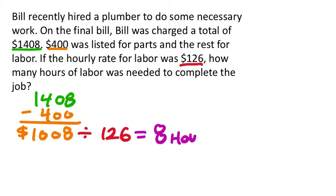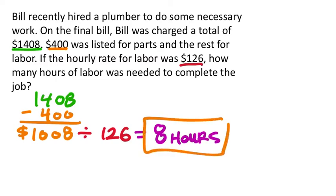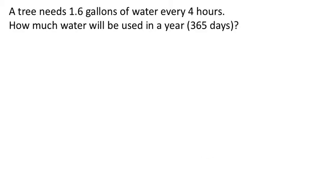So it appears that the plumber worked for 8 hours at this rate, plus charging for the parts as well. A tree needs 1.6 gallons of water every 4 hours. How much water will be used in a year — 365 days?